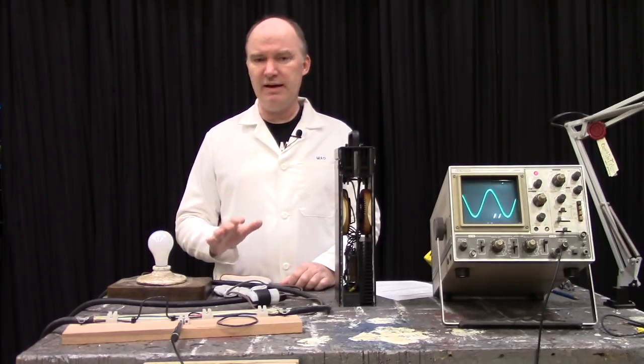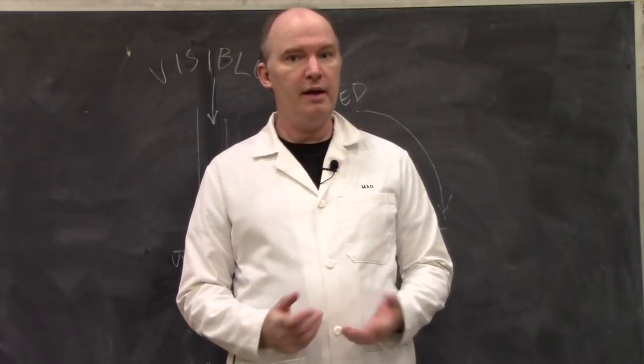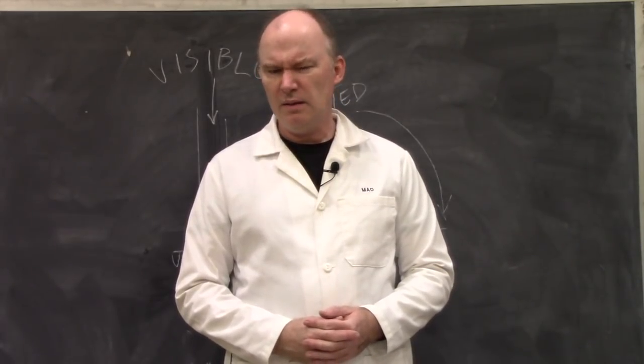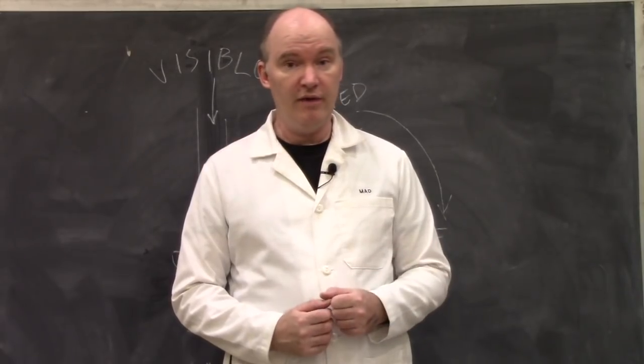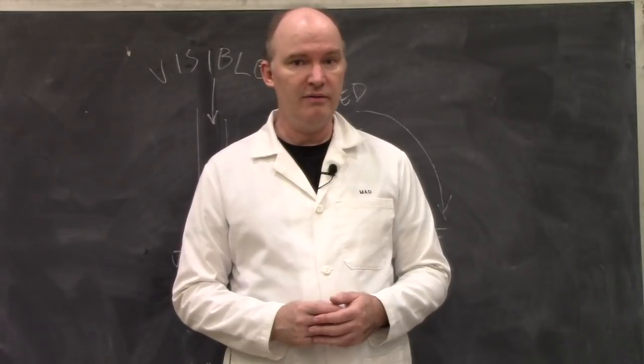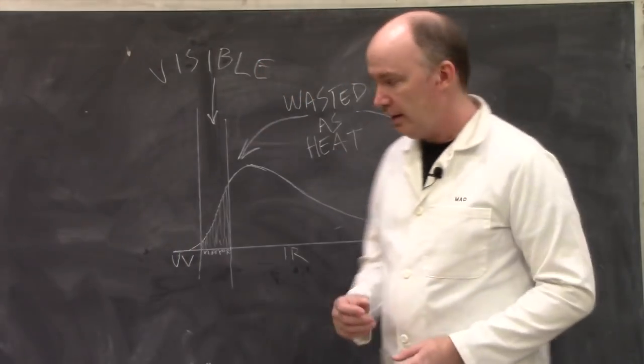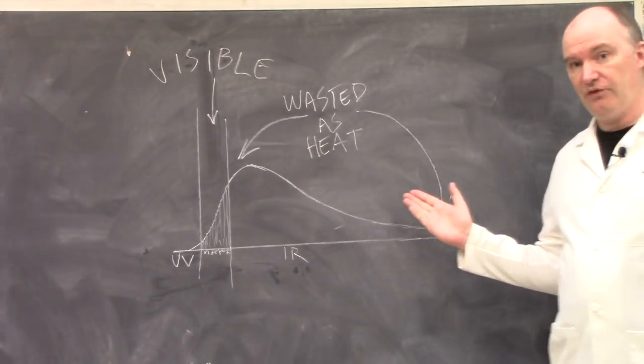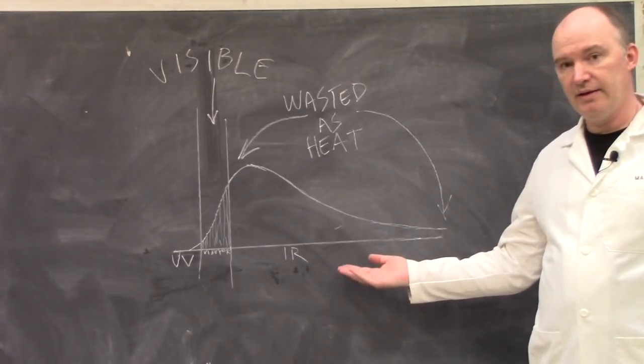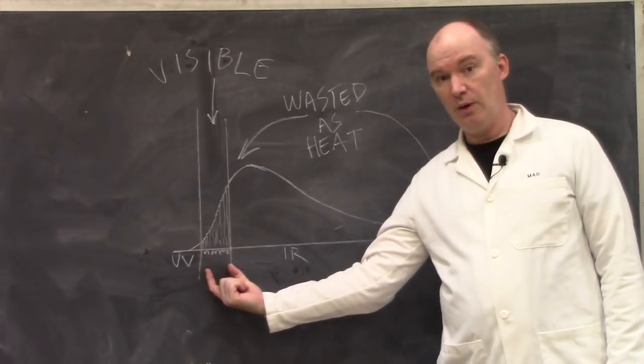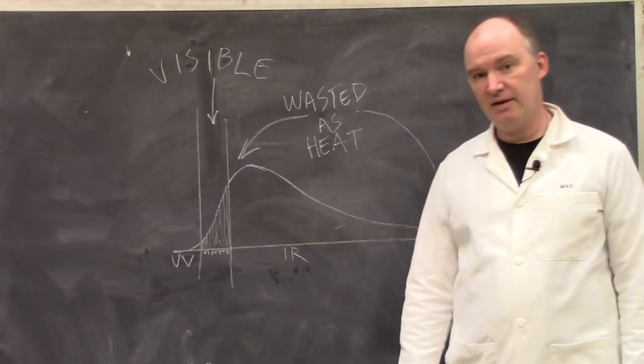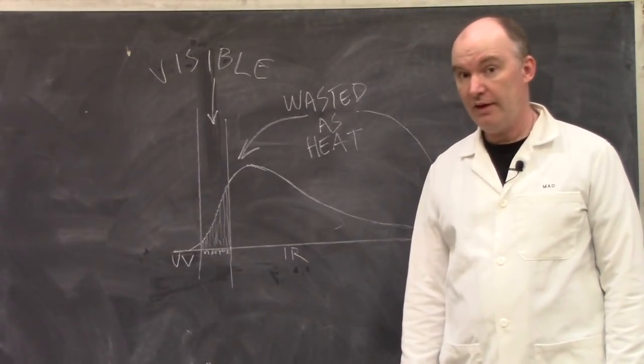While the humble incandescent lamp has served us well for over a century, there are some problems with it. One, it's very fragile. Both the envelope and the filament are susceptible to breaking, and this kills the lamp. Two, they are ridiculously inefficient. This is the light output of your standard incandescent lamp. This little bit is what we can see. All of this is wasted in just heating things up, so that's not great.